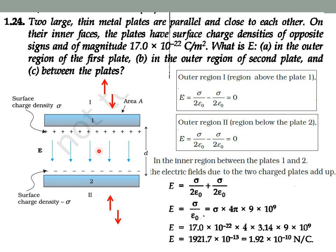For a point P in the region between the plates, the electric field due to the positive charges and the electric field due to the negative charges both act in the same direction, so they add up. That gives us σ/(2ε₀) + σ/(2ε₀) = σ/ε₀. Using the given surface charge density value, we calculate the electric field inside the plates as 1.92 × 10⁻¹⁰ N/C.